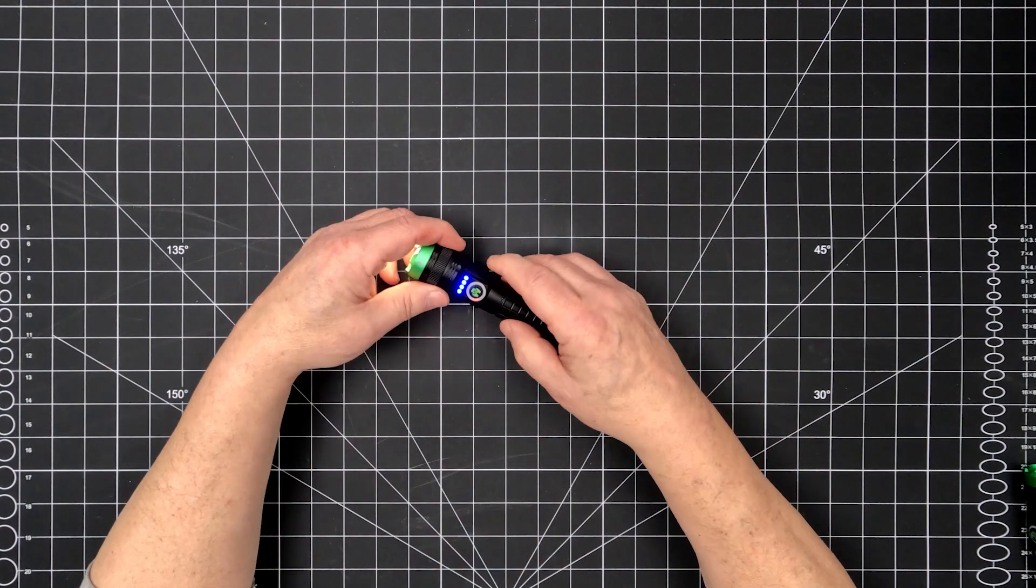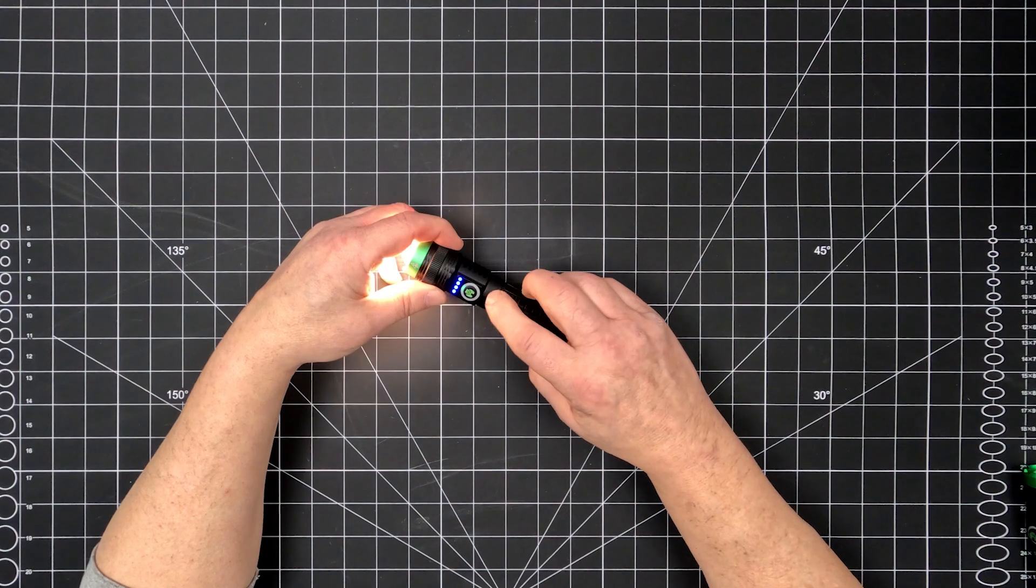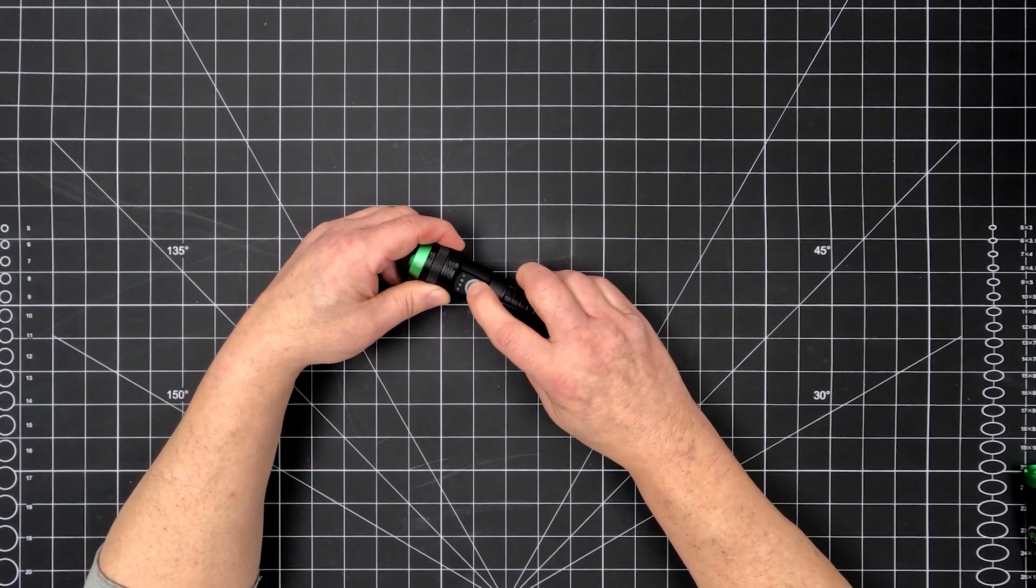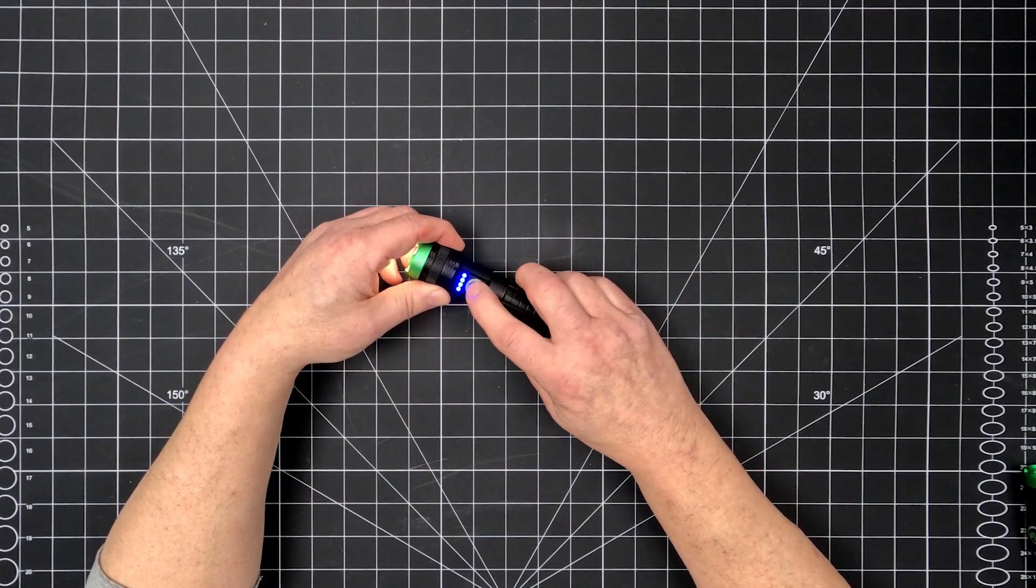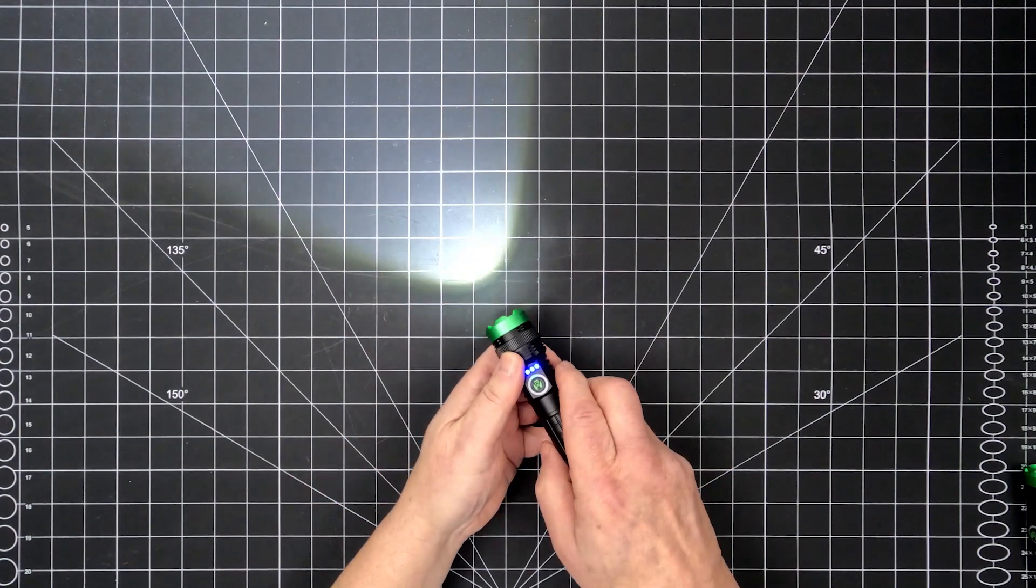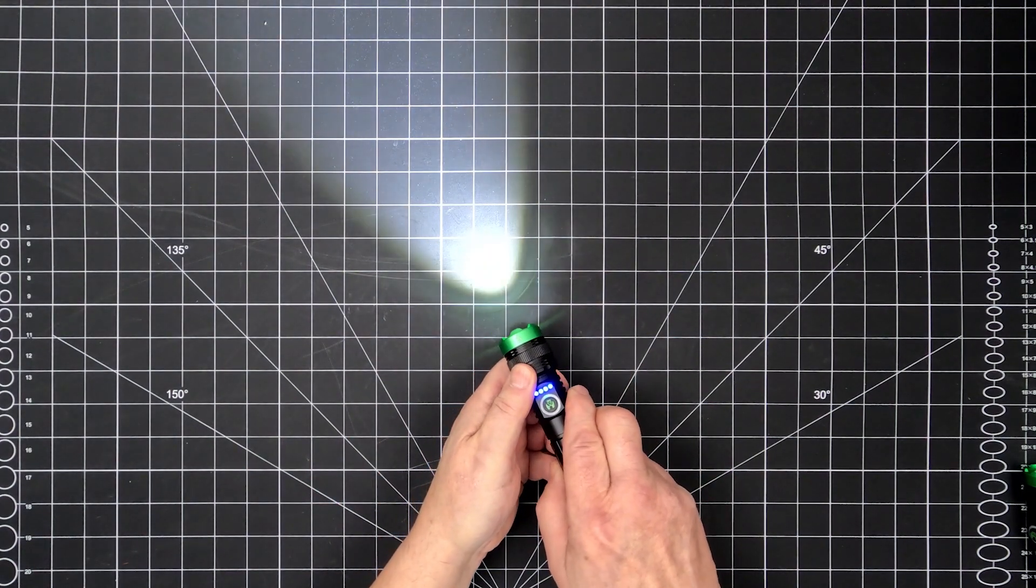Colored indicators of green, yellow, or red surrounding the power button correspond to high, medium and low on both models. A 4-step battery life indicator above the power switch and push-pull focus round out the features on both flashlights.